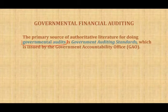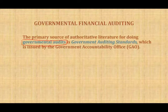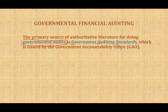The primary source of operative literature for doing a governmental audit — and what is a governmental audit? Basically, when you audit a government entity such as a school district, a county, a city, a village, or a township — you have to follow the Government Auditing Standard, GAS, which is issued by the Government Accountability Office, GAO. Think of the GAO as the AICPA; they issue those standards.